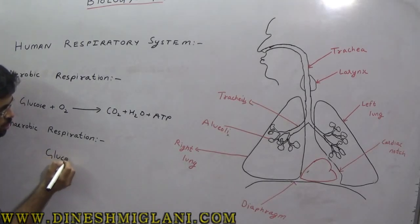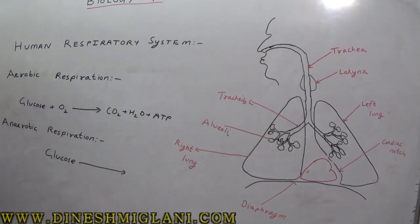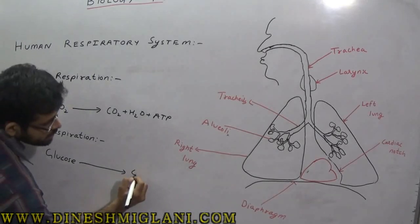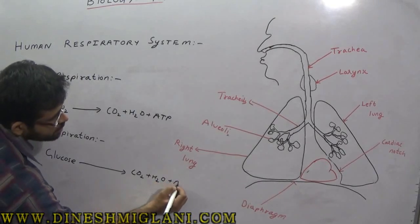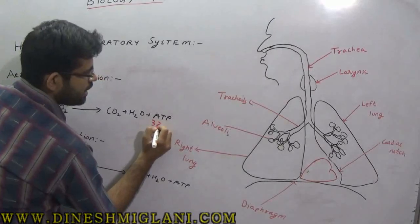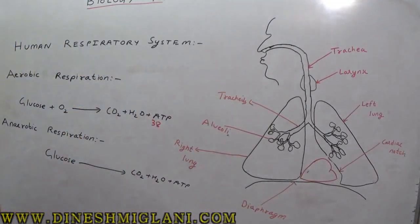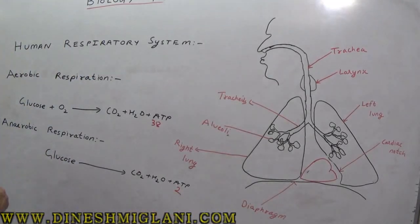In anaerobic respiration, there is no addition of oxygen — glucose is broken down without any oxygen. It also produces CO2, H2O, and ATP. The difference is that aerobic respiration produces 38 ATP molecules, while anaerobic respiration produces only 2 molecules.